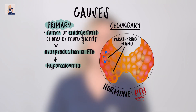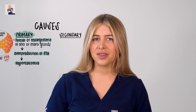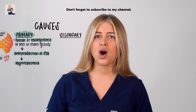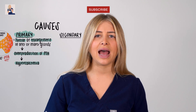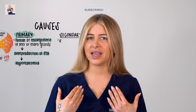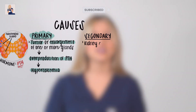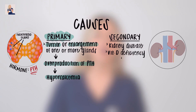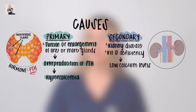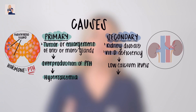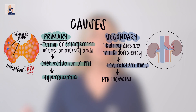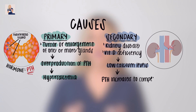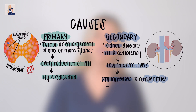Secondary hyperparathyroidism is caused by a condition outside of the parathyroid glands. Conditions like kidney disease or vitamin D deficiency cause low calcium levels in the body. Over time, the parathyroid gland compensates by increasing parathyroid hormone levels to fight to keep the calcium level up in its standard range.